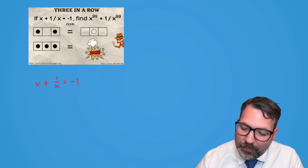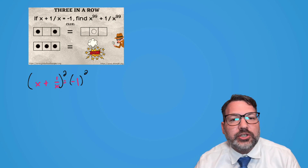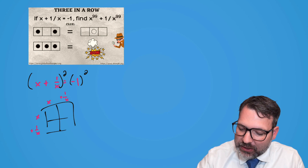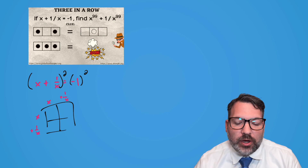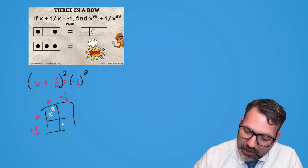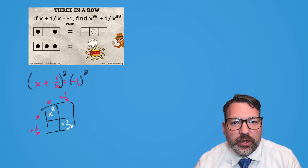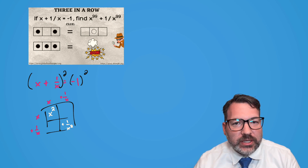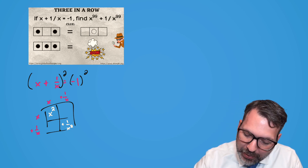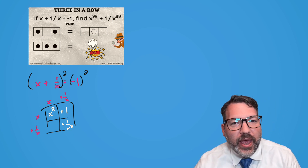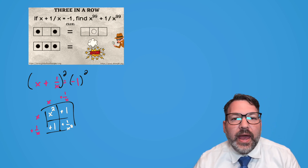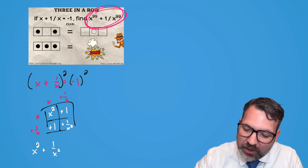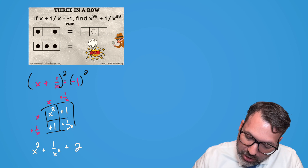My initial idea is to raise both sides of this expression to a power of two. On the left side, I'm going to multiply this out with the box method — x + 1/x times itself. x times x gives x squared, and 1/x times 1/x gives 1/x squared. The other two boxes each give x times 1/x, which is one — the variable goes away entirely. So squaring the left-hand side gives x² + 1/x² plus two.